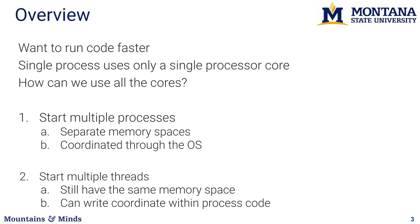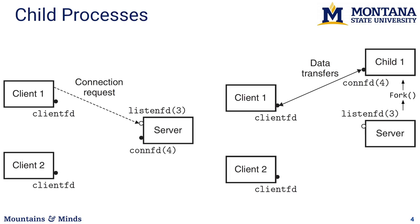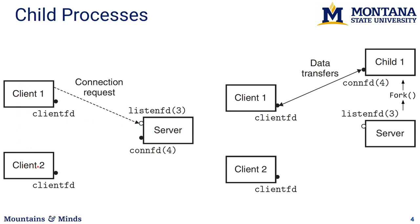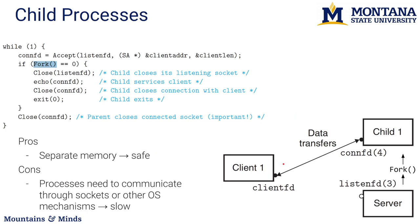Let's look at child processes first. We have a server and clients connecting to it — similar to what you're building. We have two client programs, each with a client file descriptor, and we're connecting to a listening socket. When a connection happens, we can fork the server process — this is an OS call — so we get a separate process running the same code as the server. We control functionality using if statements, and that connection becomes a connection file descriptor between the forked process and the client.